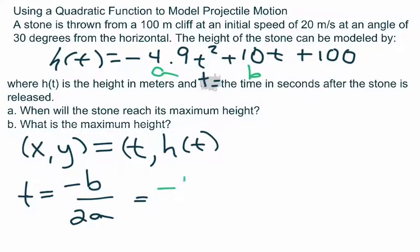So we have negative 10 over 2 times negative 4.9. This is approximately equal to 1.02 seconds.